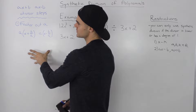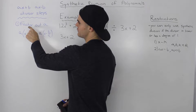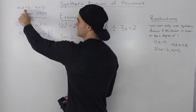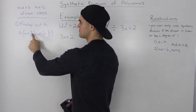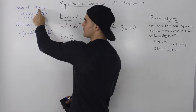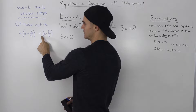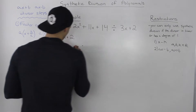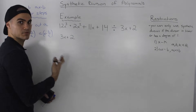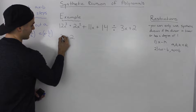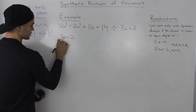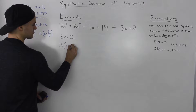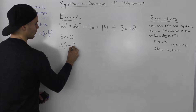Step 1: we factor out the a value from the divisor. So if we take out an a value from ax + b, we'd be left with x + b/a. And if we take out an a value from ax − b, we'd be left with x − b/a. Going back to our example, our divisor is 3x + 2, so our a value is 3. If we factor that out, we'd have 3 times (x + 2/3).